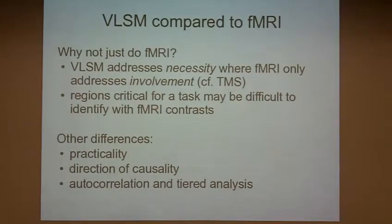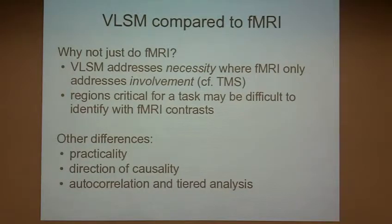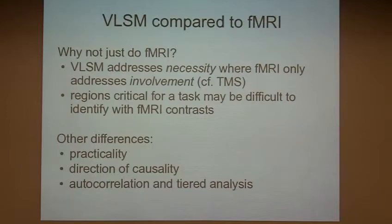There are some other practical differences between VLSM and fMRI. There's also the direction of causality — a kind of trivial difference, but it makes a very practical difference when carrying out analyses. In fMRI, the task you're performing causes your brain to go into a certain state, so the image is the dependent variable. In VLSM it's the other way around — the image tells us where the lesion is, so the dependent variable is performance. In some ways that's a much more comfortable model for psychologists.